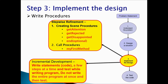Let's take a look at Step 3: implement the design. Implement the design means we are writing procedures. We'll do a stepwise refinement by creating scene procedures and then calling them. We're going to create getAttention, getRejected, getDisappointed, and optionally the end procedure. Once all four procedures are created, we will call them in myFirstMethod.